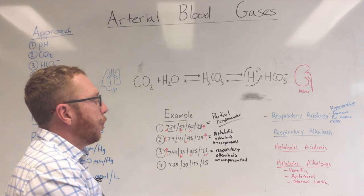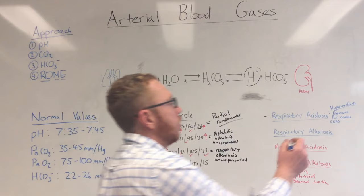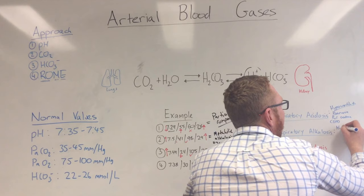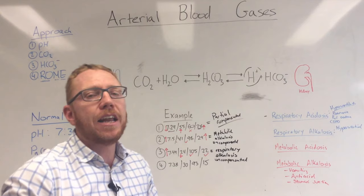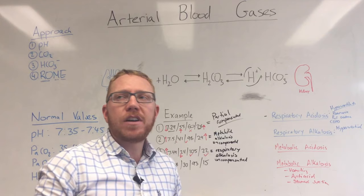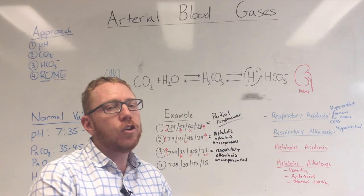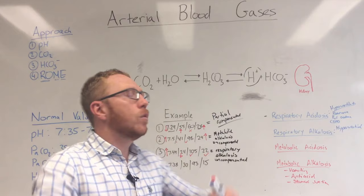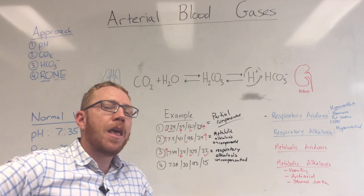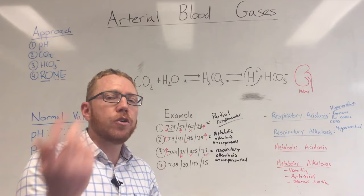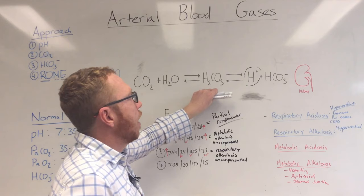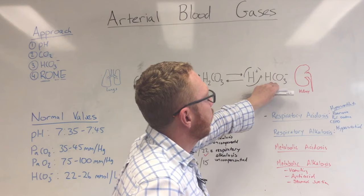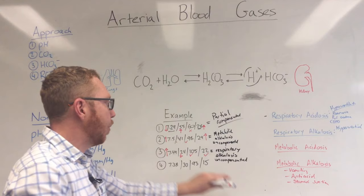What causes respiratory alkalosis? Essentially the opposite of respiratory acidosis: hyperventilation. This could be caused by pain or anxiety such as a panic attack, causing too much CO2 to be released. Going to altitude — where partial pressure of oxygen is lower — forces you to breathe more to stay oxygenated, blowing off more CO2. Heart failure could also be a cause. You would expect the kidney to compensate by excreting bicarbonate in the urine, but the kidney takes hours to do this, which is why it's not yet compensating.